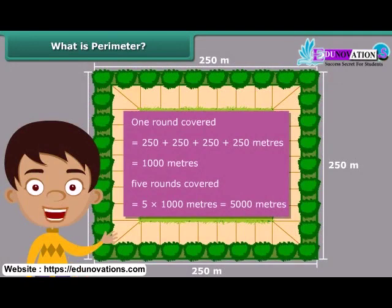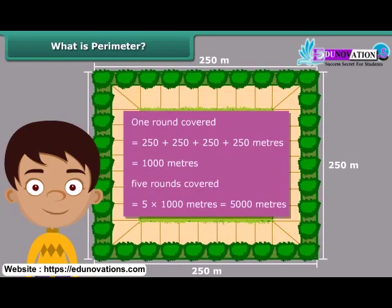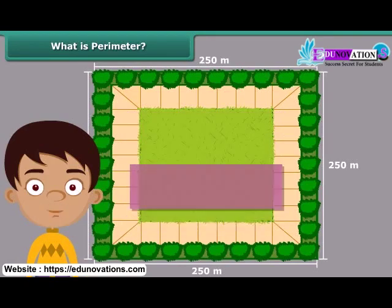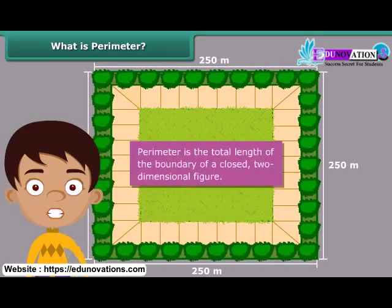In this calculation, we used the concept of perimeter when we worked out the distance you covered in one round. Perimeter is the total length of the boundary of a closed two-dimensional figure.